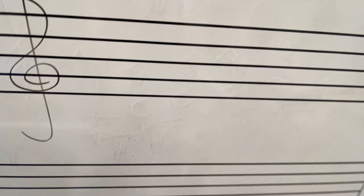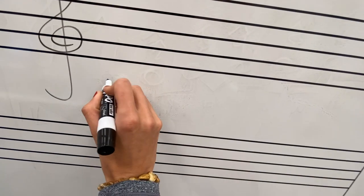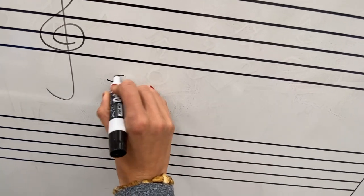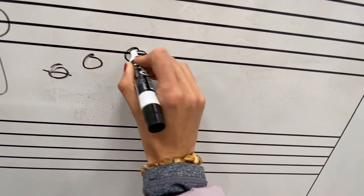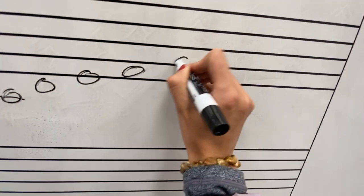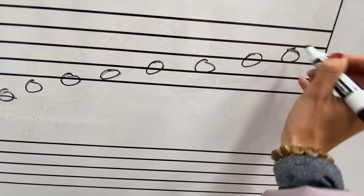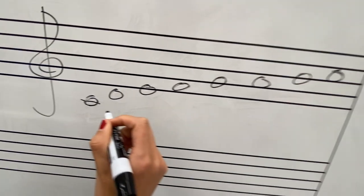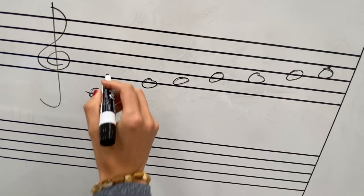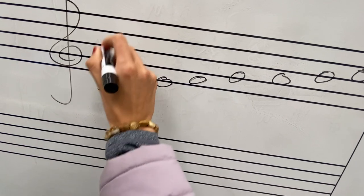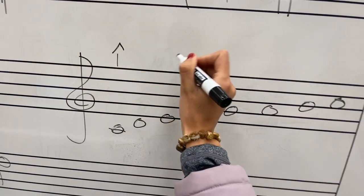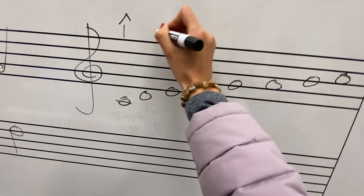So how do we write out a scale? A major scale has this pattern: C, D, E, F, G, A, B, and C. So there's a seven note scale and we indicate the scale degrees with a little caret symbol.